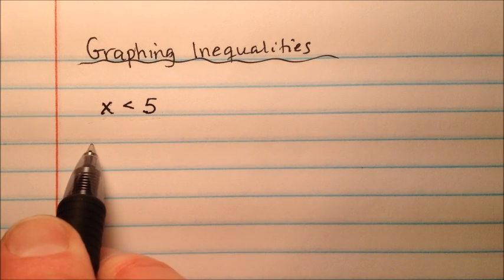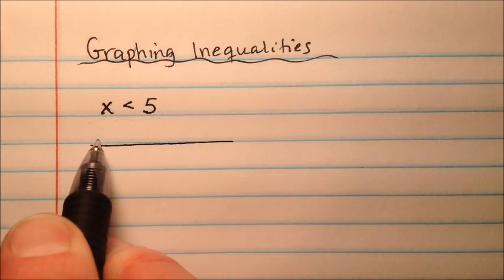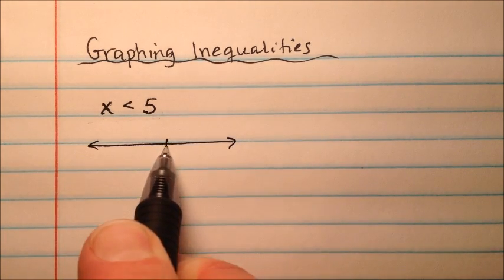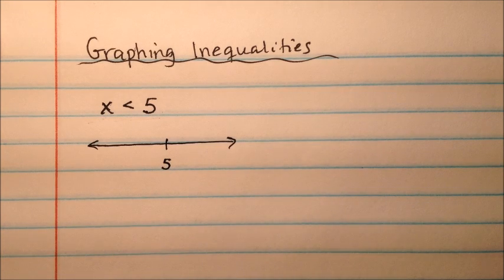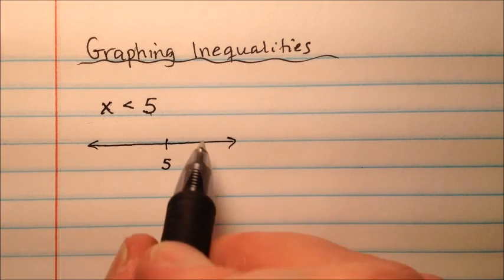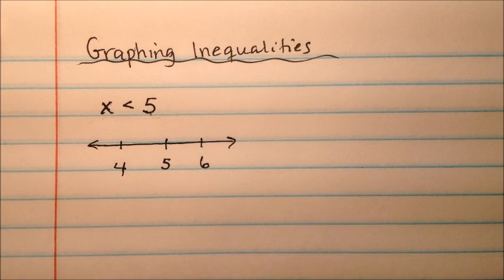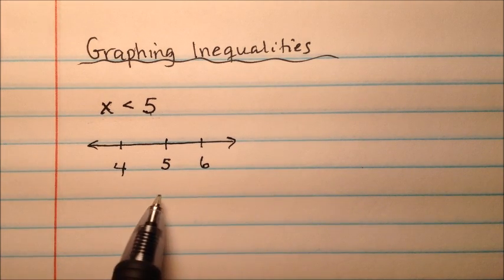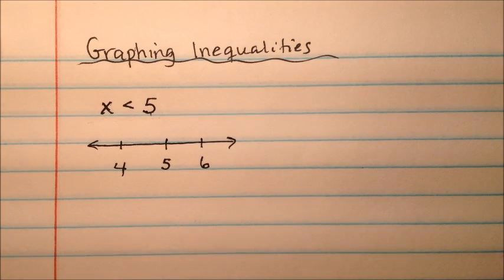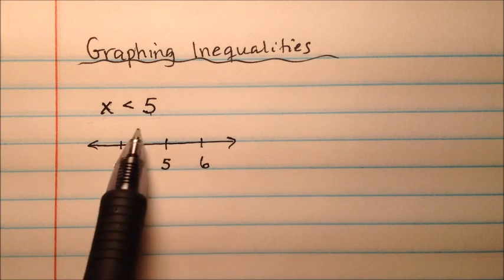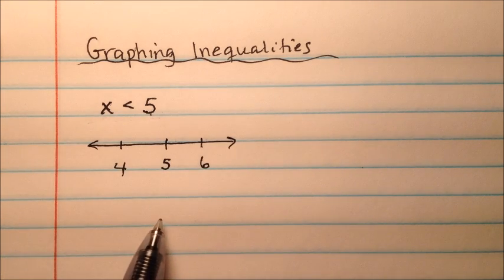So the way we can graphically represent this is we're going to draw our number line. And I'm just going to put the number 5 right in the middle because that's our number of interest. And I can put 6 over here on the right and 4 on the left. So this is just one piece of our entire real number line. And we only care about what's going on right around here because 5 is our number of interest.